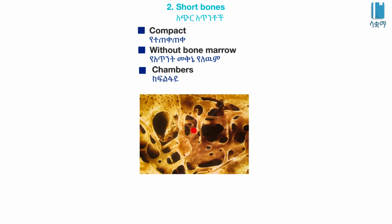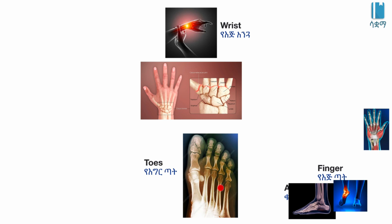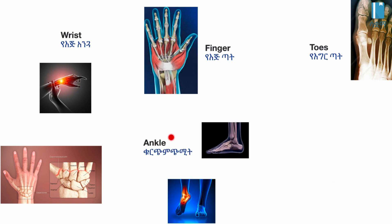Short bones are found at locations such as our wrists, teeth, fingers, and ankles.